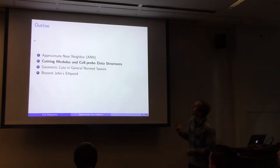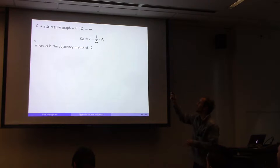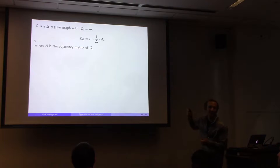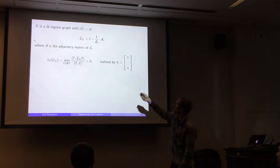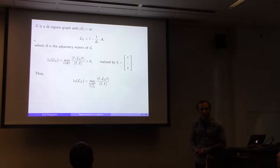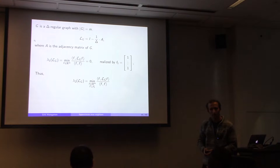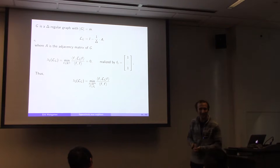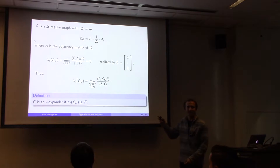Let me set up some notation. I'll think of a graph G — a delta-regular graph on m vertices — and refer to L_G as the normalized Laplacian. Lambda_1 is the smallest eigenvalue (always 0), and I'll mostly focus on lambda_2. I'll call G an epsilon-expander if lambda_2 of the normalized Laplacian is lower bounded by epsilon squared, so I can apply Cheeger's inequality to the graph.